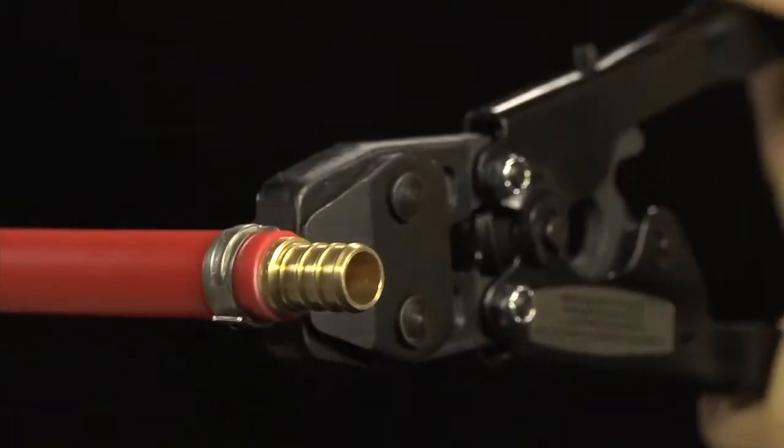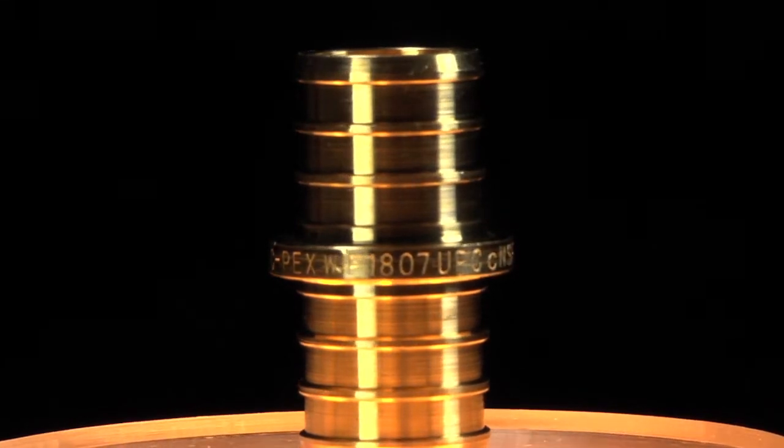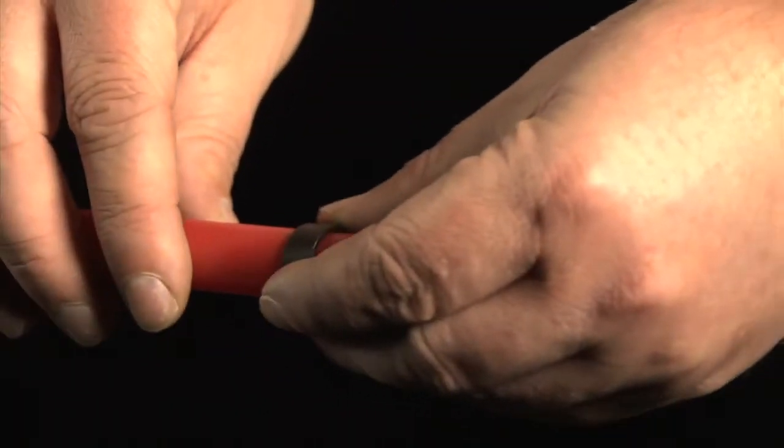These ridges or barbs work with the tubing and ring to produce a high-pressure, no-leak seal. Brass and poly-alloy PEX fittings are lead-free. Barb PEX fittings are attached to PEX with a crimp ring or pinch clamp.